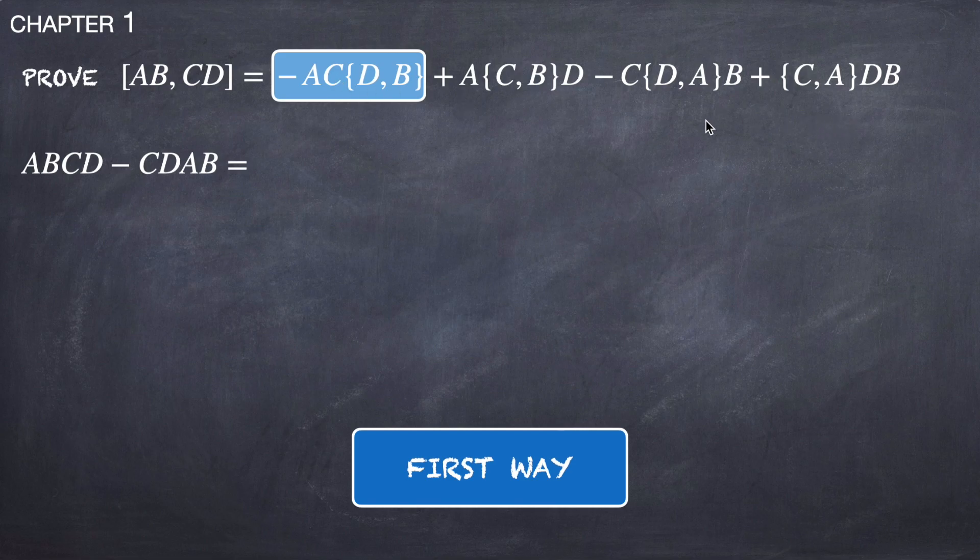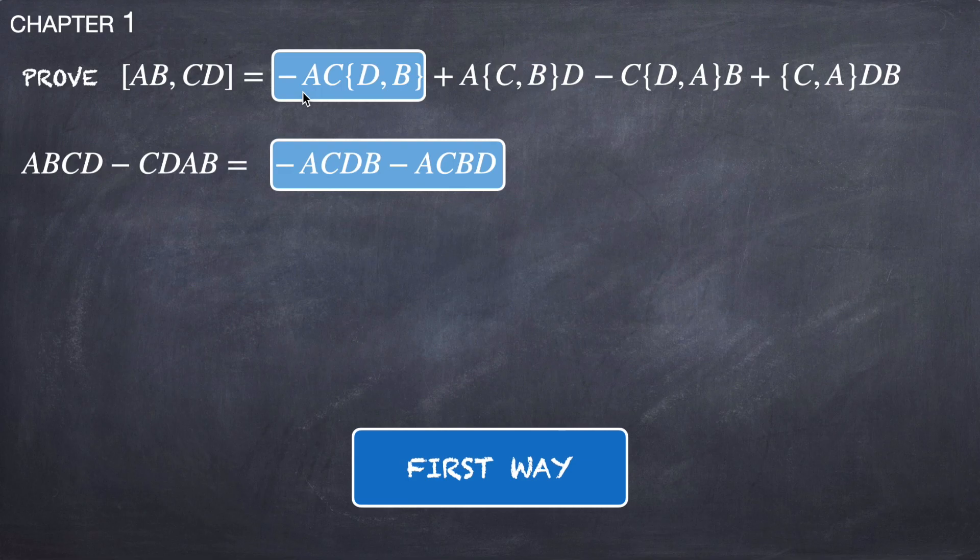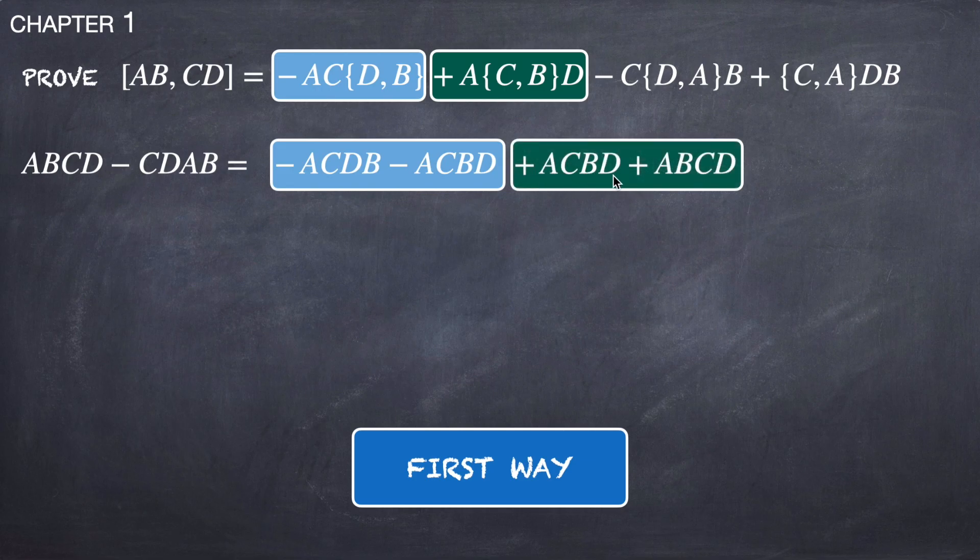Then the first term is minus AC{D,B} minus ACDB plus A{C,B}D. The third term...